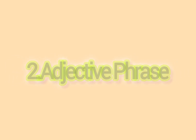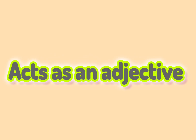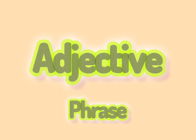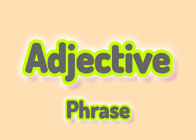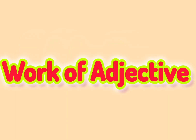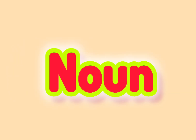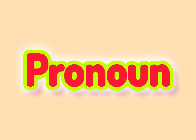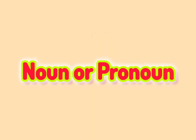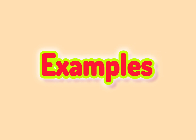Adjective phrase: a phrase which acts as an adjective in a sentence is called an adjective phrase. It does the work of an adjective. An adjective modifies a noun or a pronoun. It contains modifiers and other words modifying the noun or pronoun.